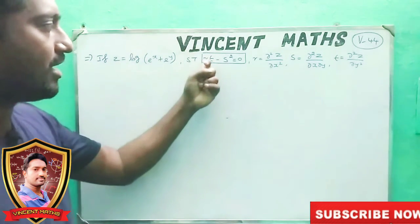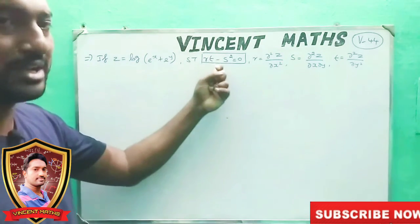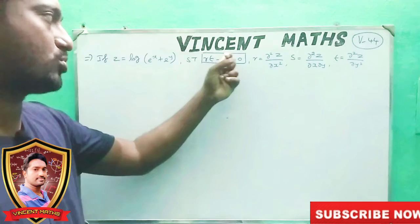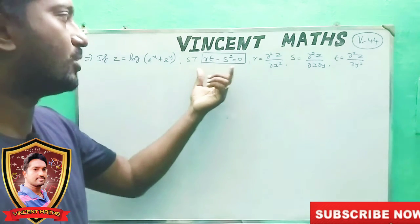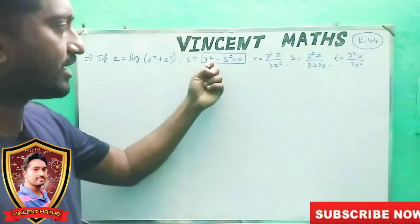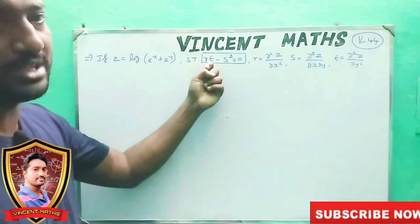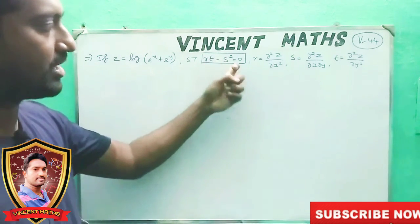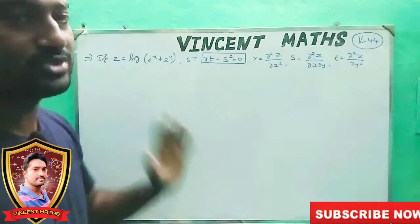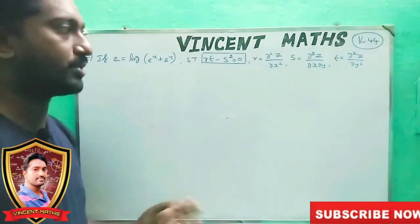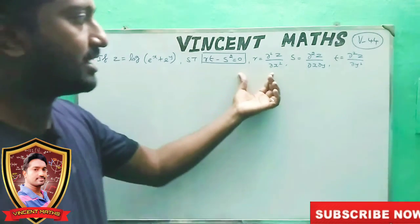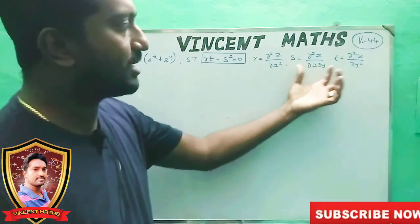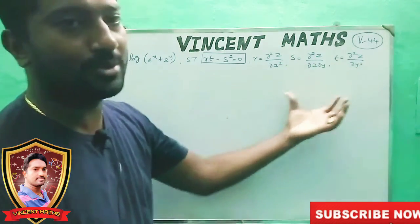What do I do? R into t minus s squared equal to zero. That means R into t is equal to s squared. So what do I do?